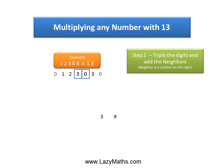Then the next pair 3 and 0, triple of 3 is 9 plus the neighbor 0 gives us a 9.